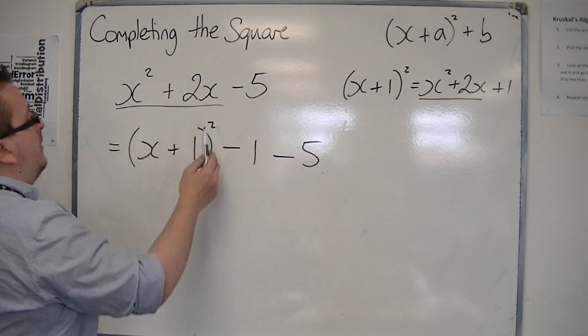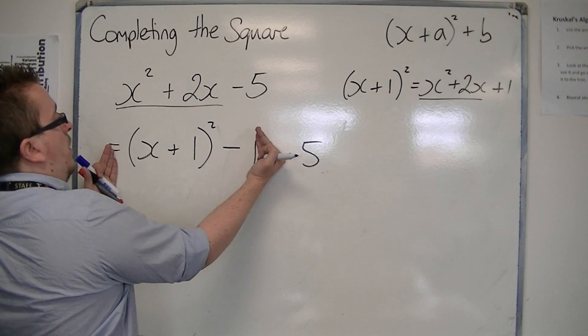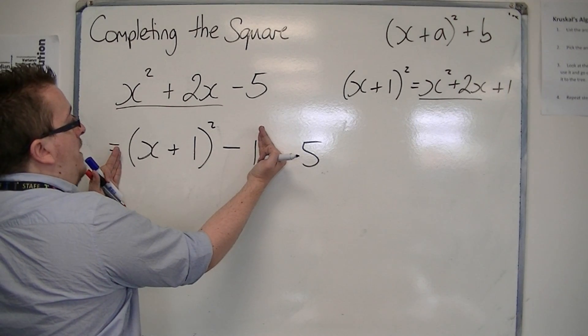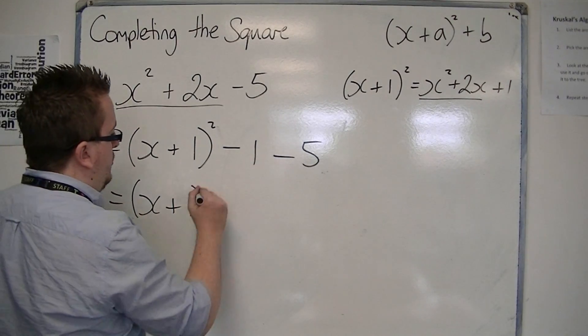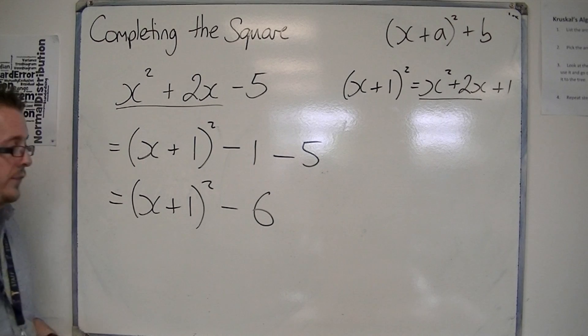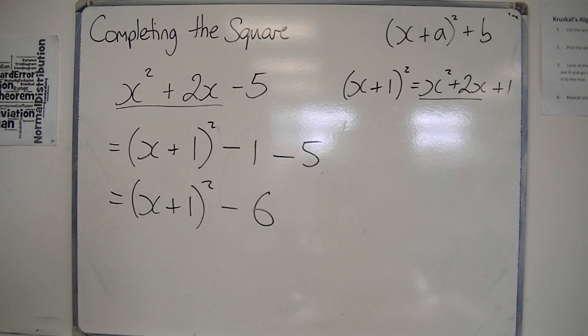So replace the x² + 2x with (x + 1)², take away 1, and then write that so it simplifies directly to -6. So let's have a look at another example, because I went through that pretty quickly.